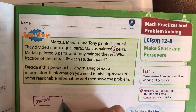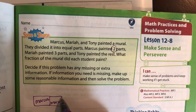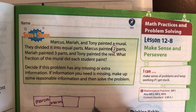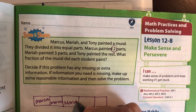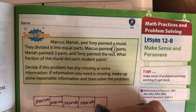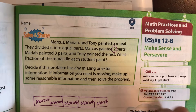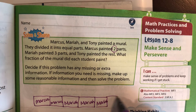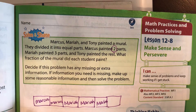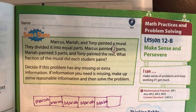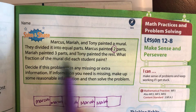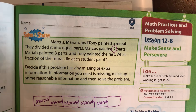He paints two parts of it. And Mariah paints three parts. And Tony paints the rest. Well, how many does Tony paint? We don't know because we don't know how many parts total there were. So if you look here, what fraction of the mural did each student paint?